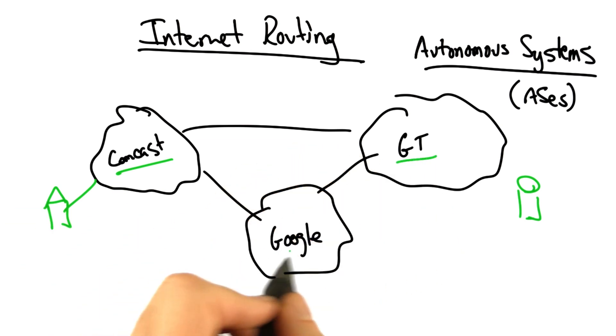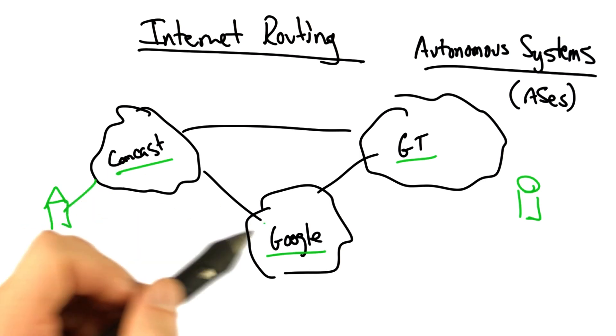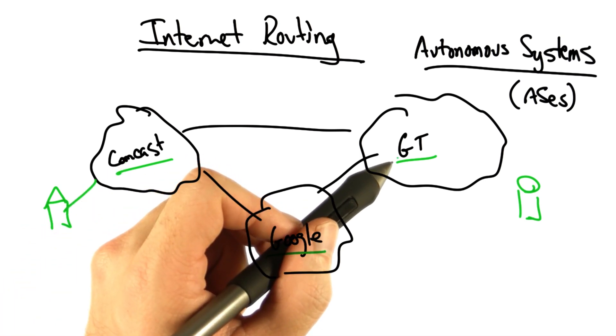Networks such as Comcast, Georgia Tech, and Google are different types of autonomous systems. An autonomous system might be an internet service provider, a content provider, a campus network, or any other independently operated network.